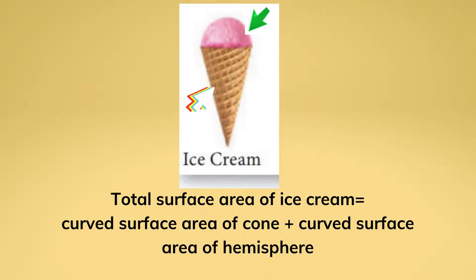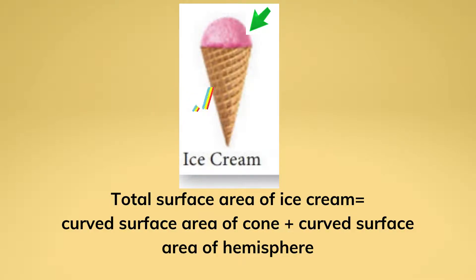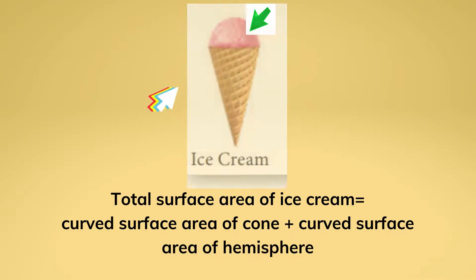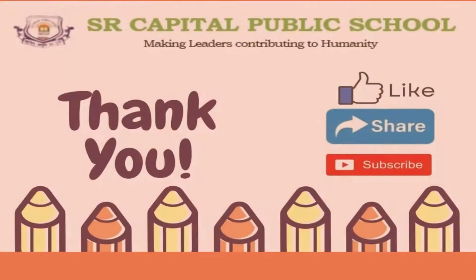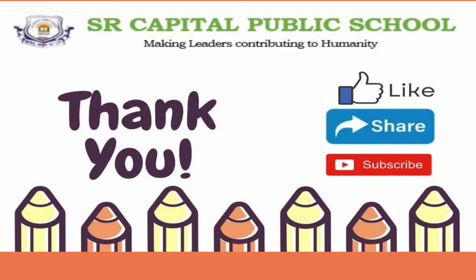Now look at the figure of an ice cream. The total surface area of the ice cream is equal to the curved surface area of the cone plus the curved surface area of the hemisphere.